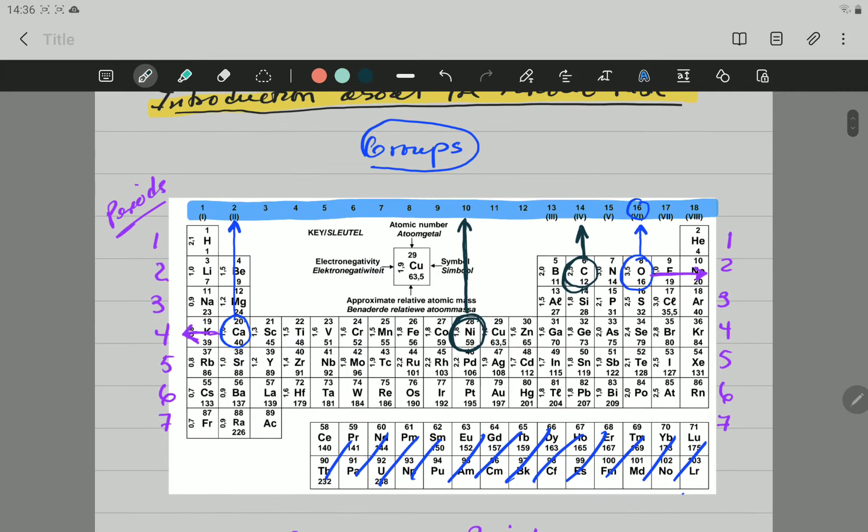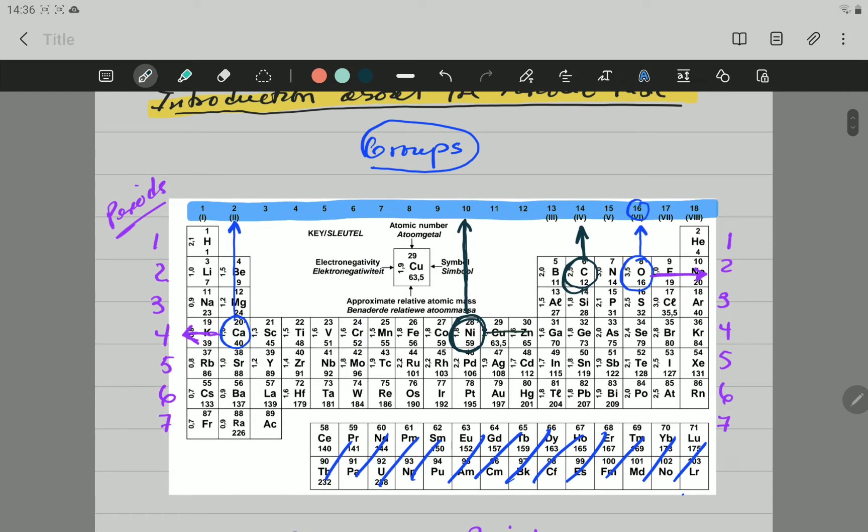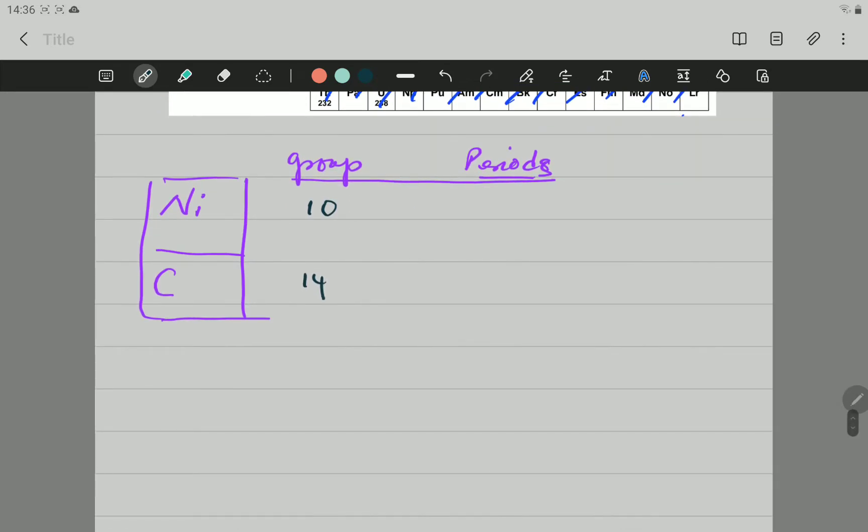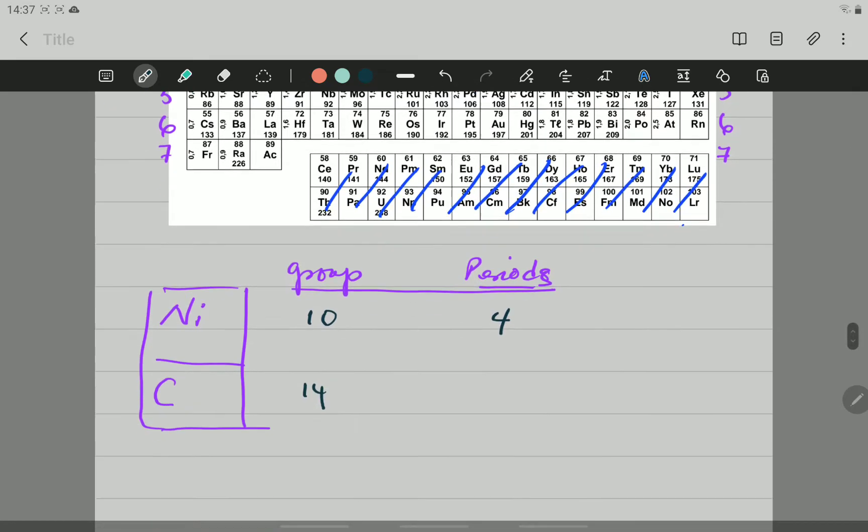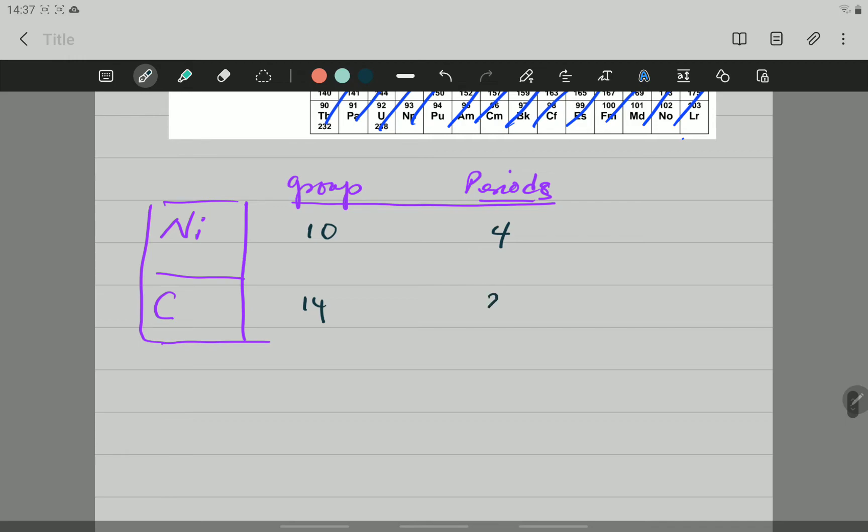In what period is Nickel? So, you can either go to the right, or to the left, it will give you the same period. You can see Nickel is in Period number 4. And Carbon. If you go to Carbon, you can go either to right or left. But to the right is closer. So, you can see it in Period number 2. Sorry. Period number 2.